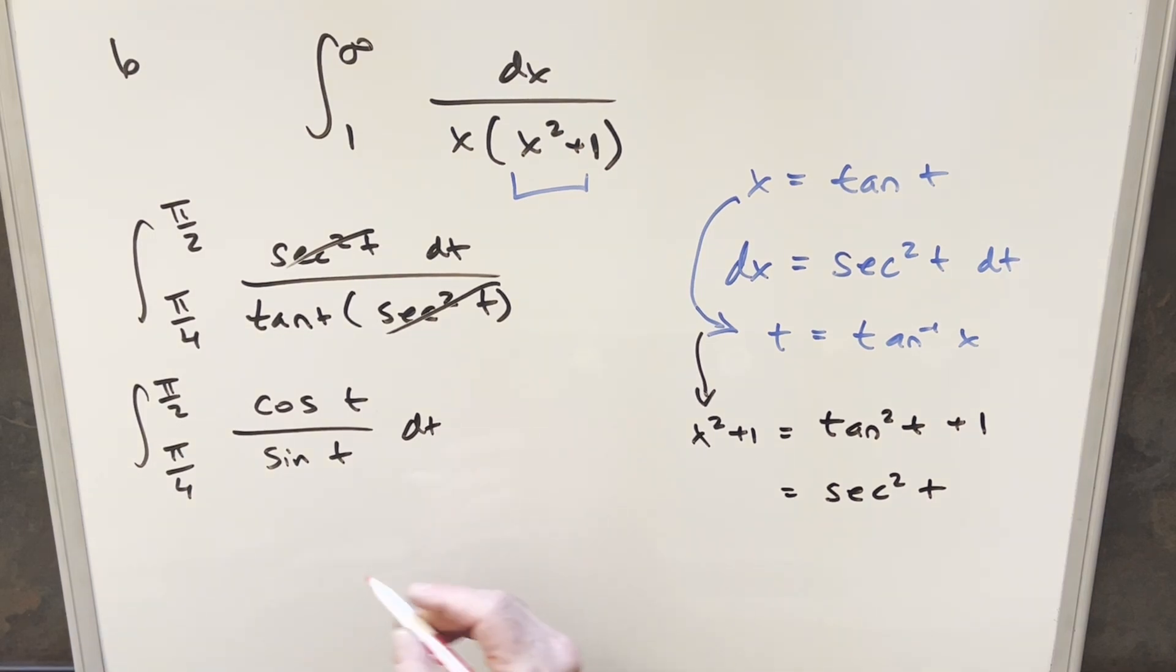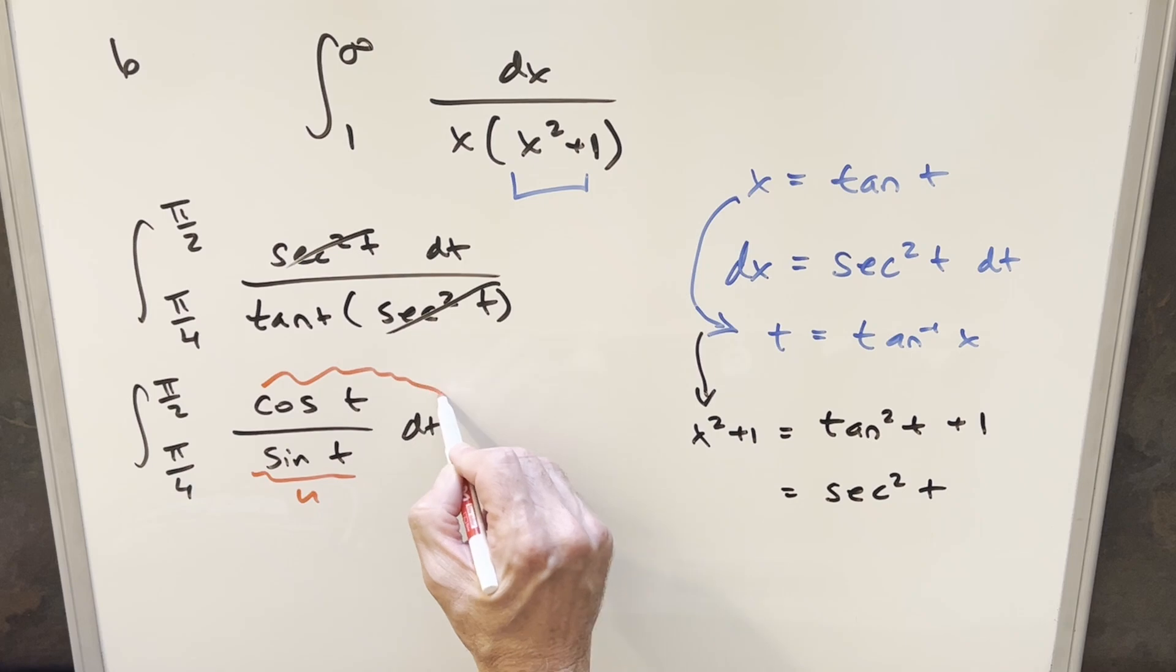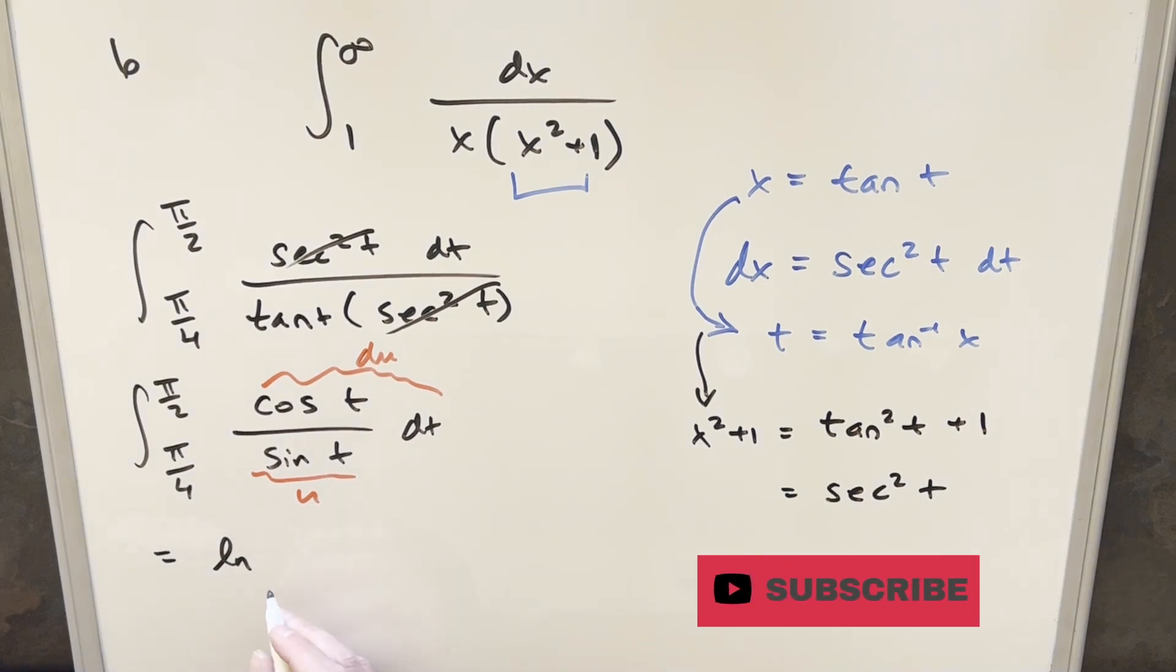Then let's just do the u sub in our head because if sine of t is going to be u, then cosine t dt is going to be du. So then when we integrate this, we're just going to have natural log absolute value sine t.